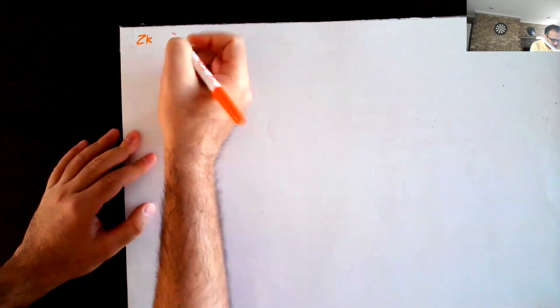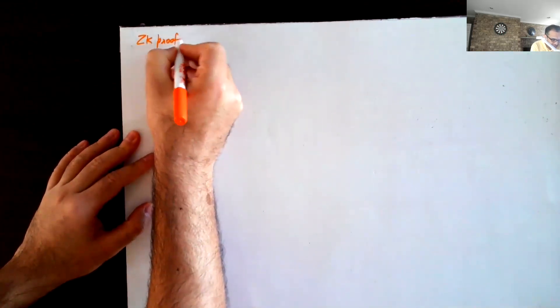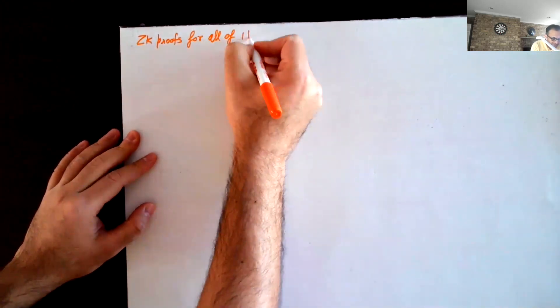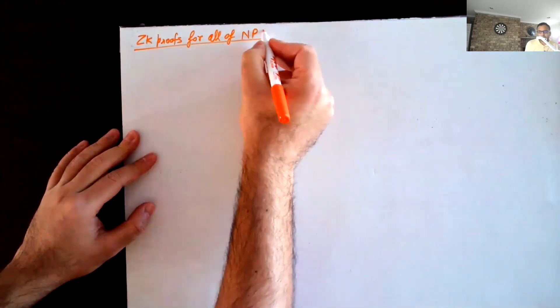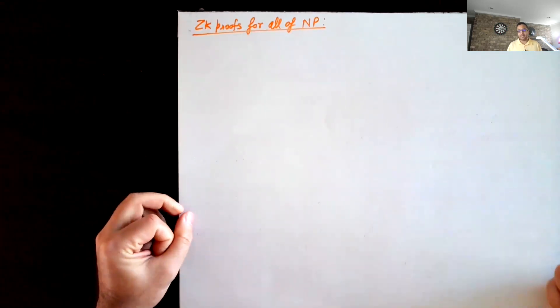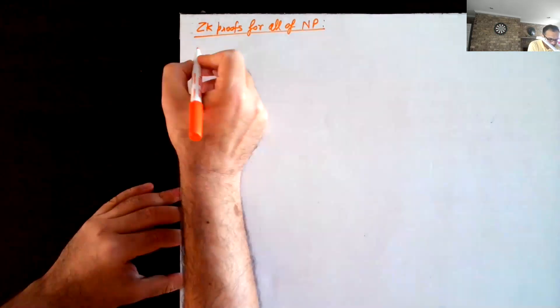Welcome everyone. We will continue with zero-knowledge proofs. Last time we saw the notion of commitment schemes, which was supposed to help us in building zero-knowledge proofs, and today we will see exactly how we do that. The topic of today will be zero-knowledge proofs for all of NP. We will build a zero-knowledge proof for an NP-complete problem — in particular, the graph three-coloring problem.